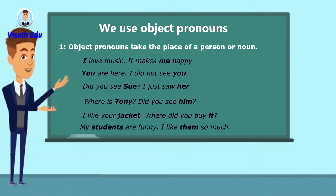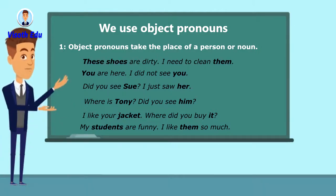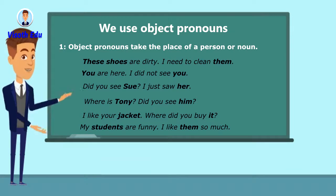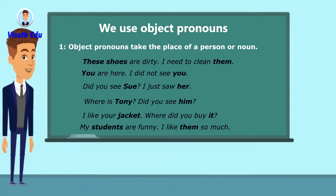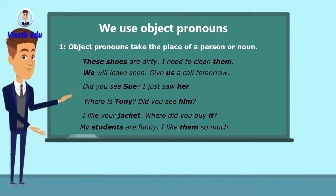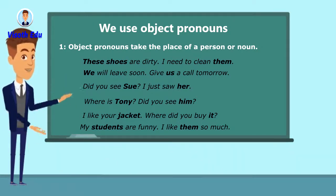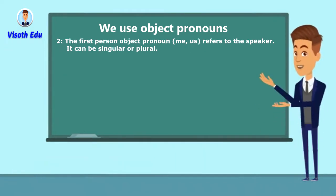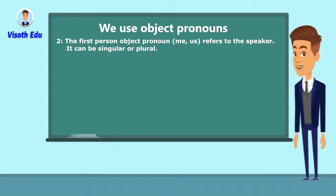'My students are funny, I like them so much.' 'Them' is the objective pronoun — it takes the place of the noun students. 'These shoes are dirty, I need to clean them.' 'We will leave soon, give us a call tomorrow.' 'Us' is the object pronoun of 'we.'